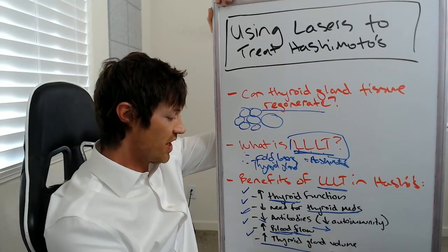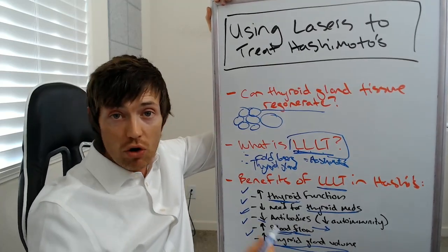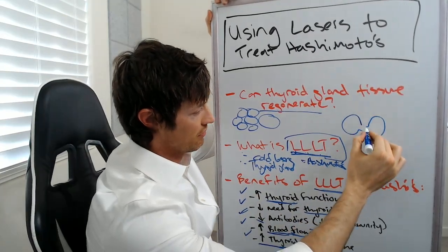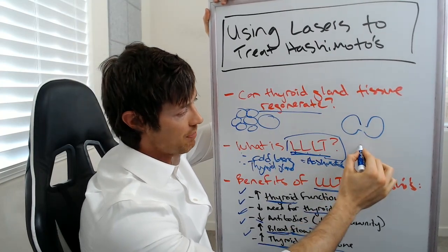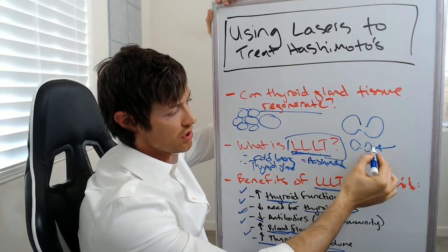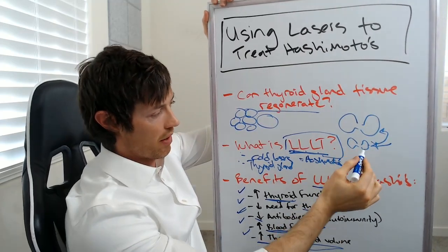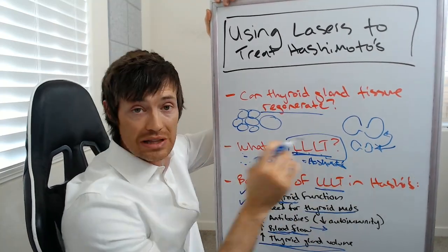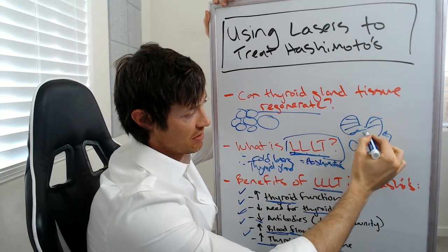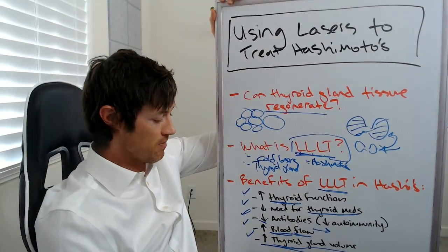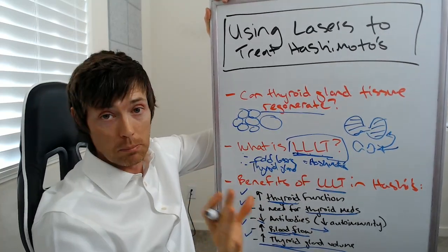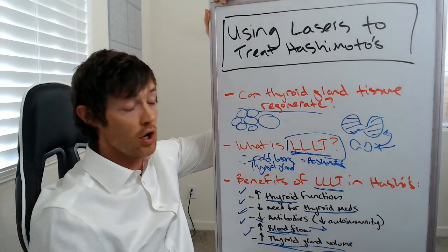Lastly, people who use LLLT do see an increase in thyroid gland volume on ultrasound. In Hashimoto's, the thyroid gland gets smaller — it atrophies. But if you can reduce the inflammation, you can actually increase the size of the thyroid gland. When you look at it under ultrasound and measure the volume, these studies showed the thyroid gland was actually enlarging to its normal size — not getting big like a goiter, but back to its normal size, which is a good thing.